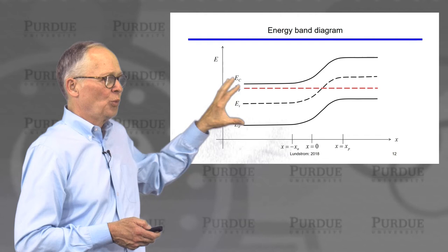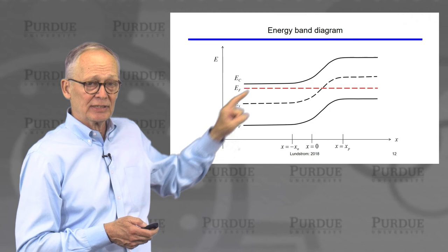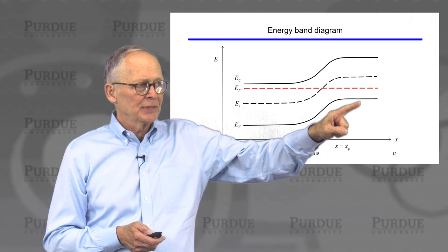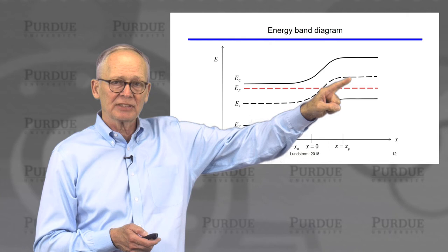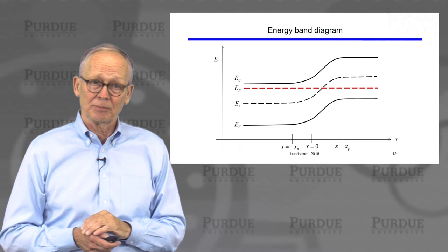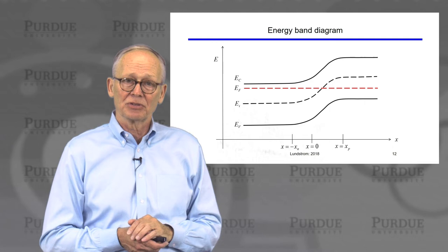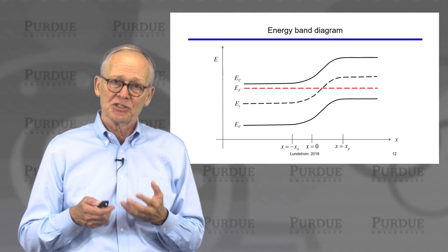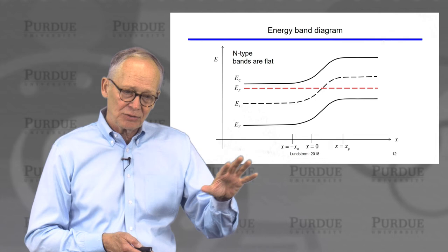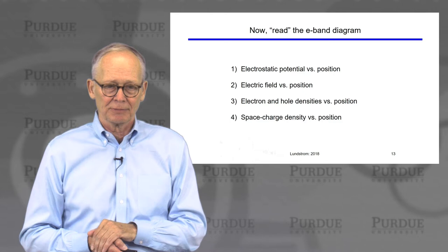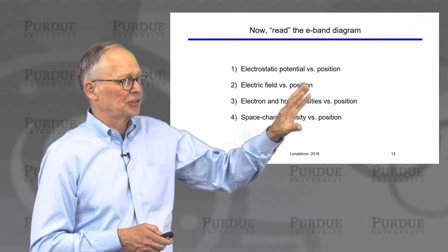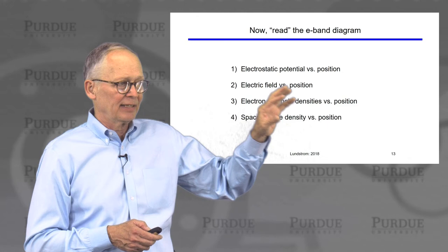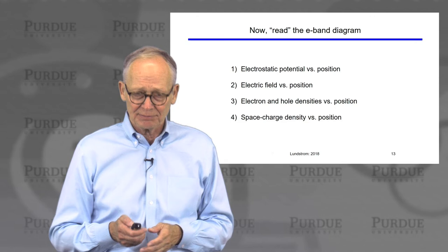This is what you would find from that procedure. Way out to the left, we just see a uniform N-type semiconductor — N-type because the Fermi level is near the conduction band, way above the intrinsic level. Over to the right, we see a uniform P-type semiconductor, with the Fermi level well below the intrinsic level, closer to the top of the valence band. We smoothly connect everything in the transition region so there are no discontinuities. Bands are flat way out to the left, flat way out to the right, and there's a transition region in the middle. Now we want to read this energy band diagram and extract the electrostatic potential, electric field, carrier densities, and space charge density versus position.